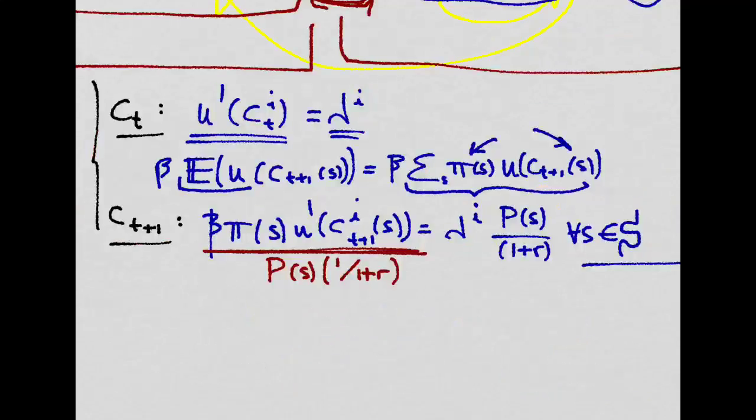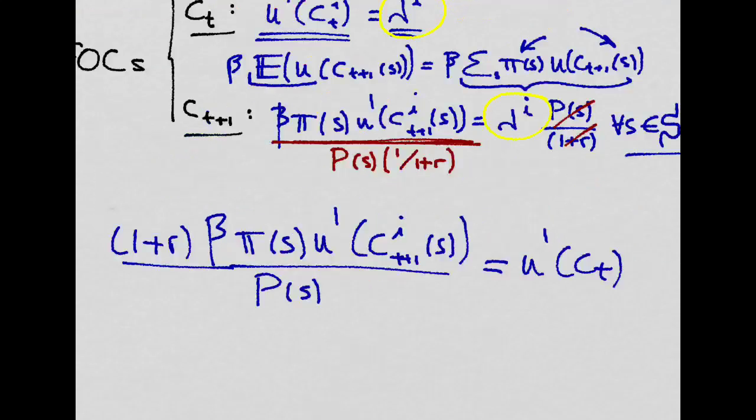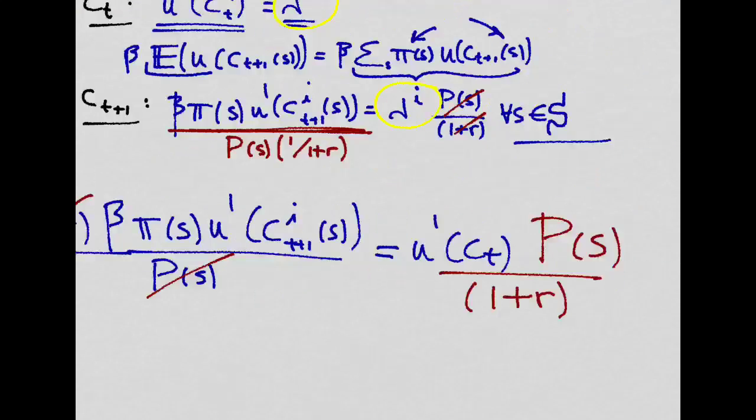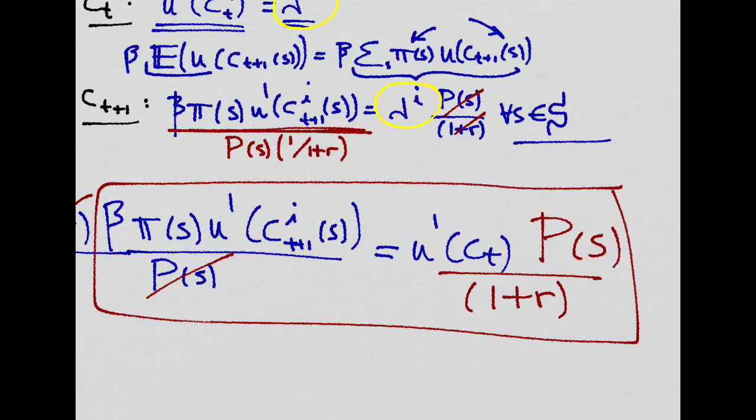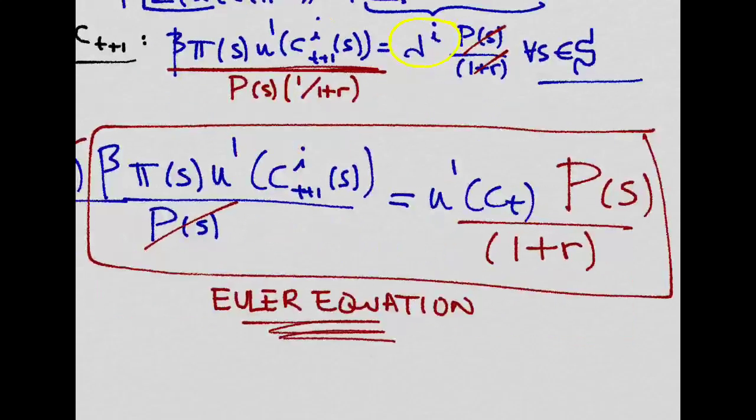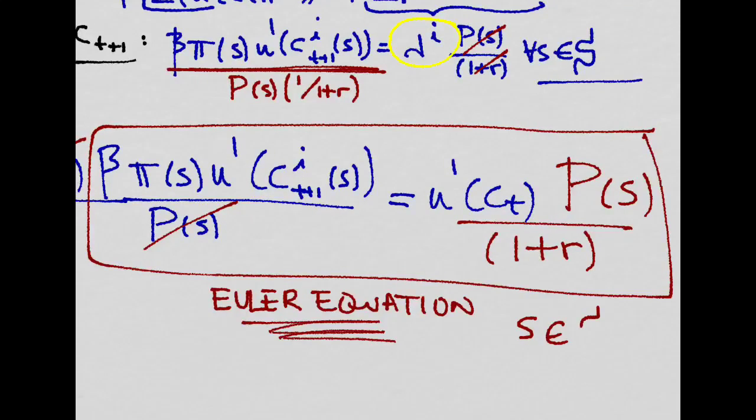Now, if we rearrange this to solve for the shadow price, lambda, and we equalize these two expressions for lambda, we will get this, which we can rearrange to look like this. This is known as the Euler equation, and it will hold for any S, any state of the world, in our possible set of states of the world.